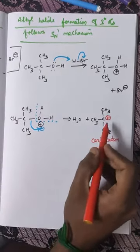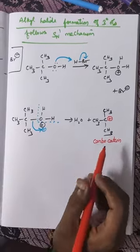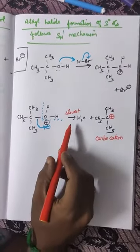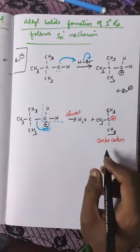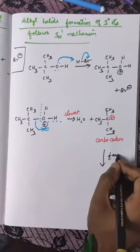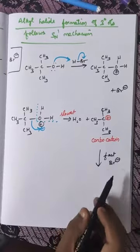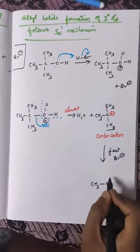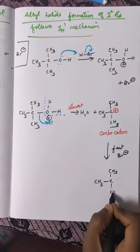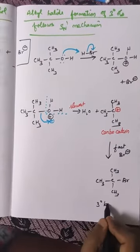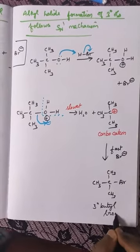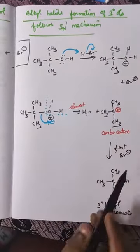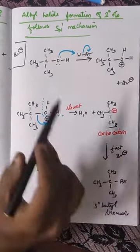The formation of the carbocation is the slowest step, making it the rate-determining step. After this, the next step is faster: the nucleophile bromide ion gets added to the carbocation, forming (CH3)3C–Br, called tertiary butyl bromide. So from tertiary butyl alcohol we get tertiary butyl bromide — the OH group is replaced by the nucleophile bromide ion, and nucleophilic substitution reaction takes place.